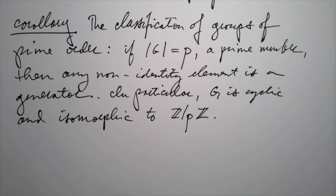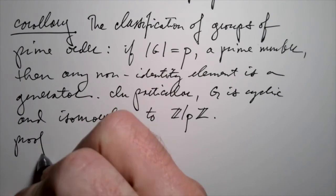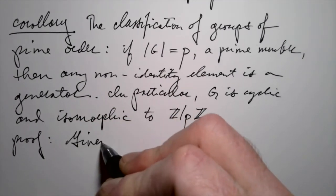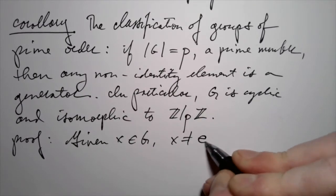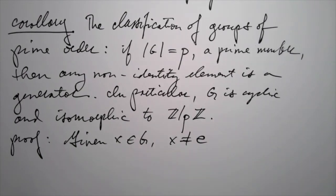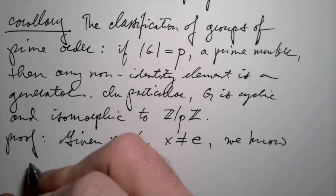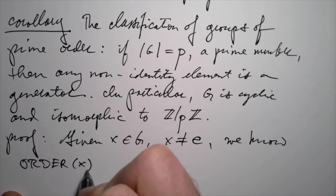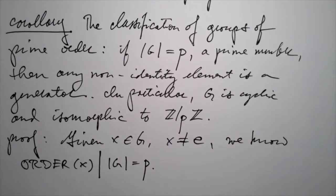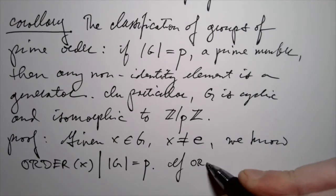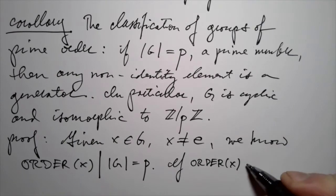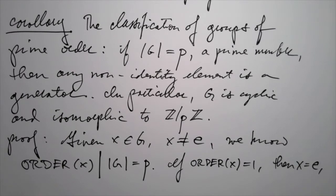How does this follow from Lagrange's theorem? Given an element of G that's not the identity, we know by the previous corollary that the order of that element X must divide the order of the group, which is P. Now we use the fact that P is a prime number. What are the possible divisors of a prime number? By definition, the only positive integers that divide P are 1 and P. If that order happens to be 1, then it has to be the identity element — and we assumed that was not the case. That's a contradiction.